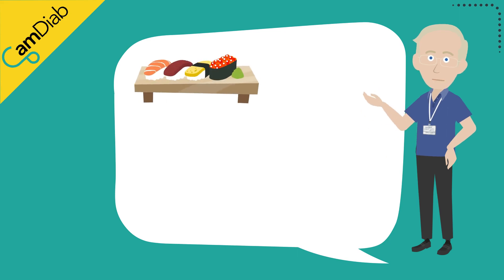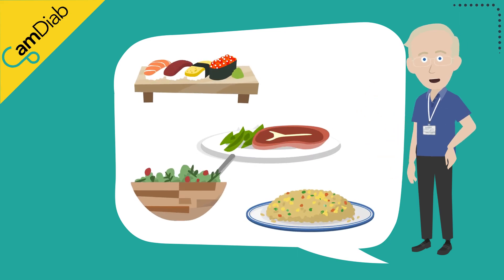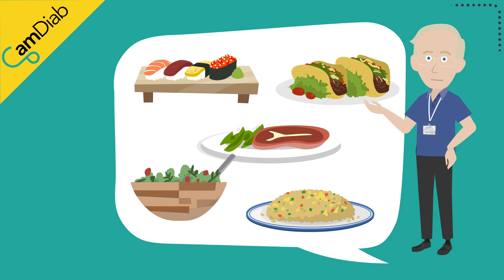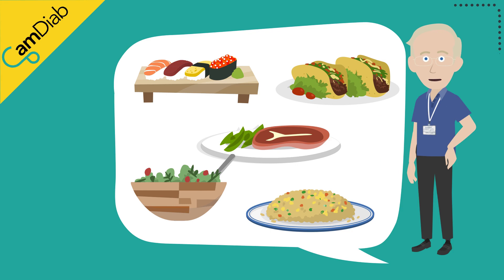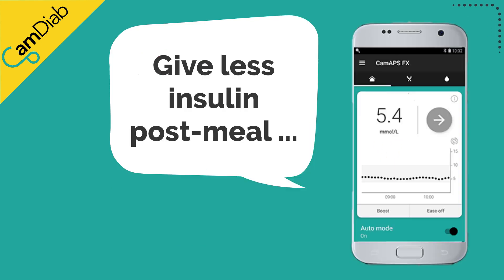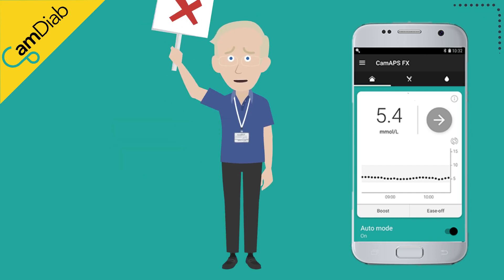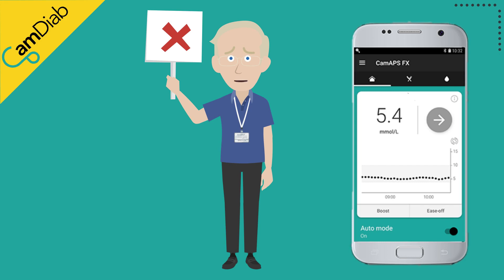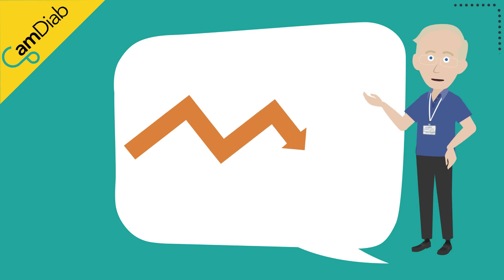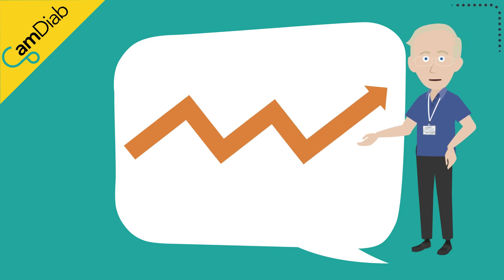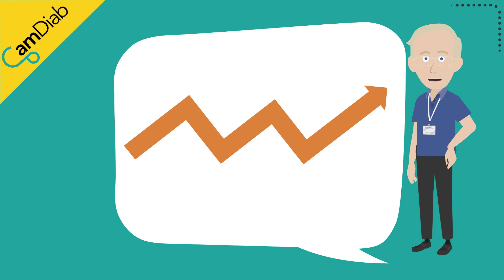The same is true if someone is constantly giving too much insulin pre-meal — for example when their insulin-to-carbohydrate ratio is too strong or they are overestimating carbohydrates. CAM-APSFX will learn to give less or even stop delivering insulin post-meal to try to prevent a low glucose level. It's important to keep in mind that even stopping insulin after the meal may not prevent hypoglycemia if insulin on board is too high. You can review the insulin-to-carbohydrate ratio and carbohydrate counting by looking to see if CAM-APSFX is delivering a lot of insulin or shutting off after meals.